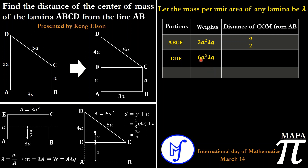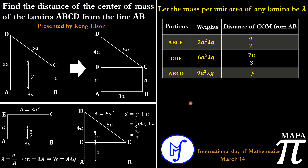The area of the triangle is 6a², so the weight is 6a²λg and the distance is 7a/3. For our last portion — the whole laminar ABCD — the weight is the sum of the weights of the individual laminas: 3a²λg plus 6a²λg, giving us 9a²λg. We call the distance of the center of mass of the whole laminar from line AB as y-bar.